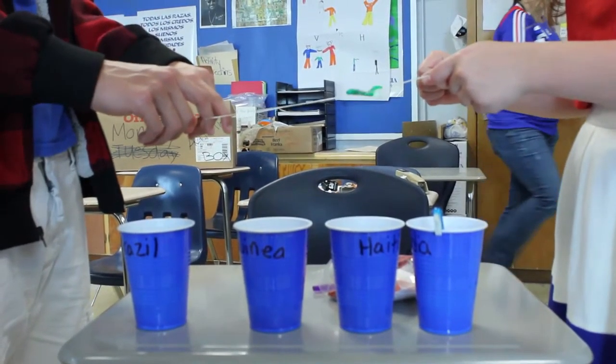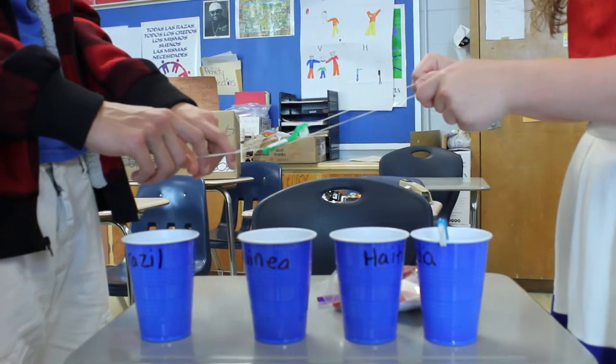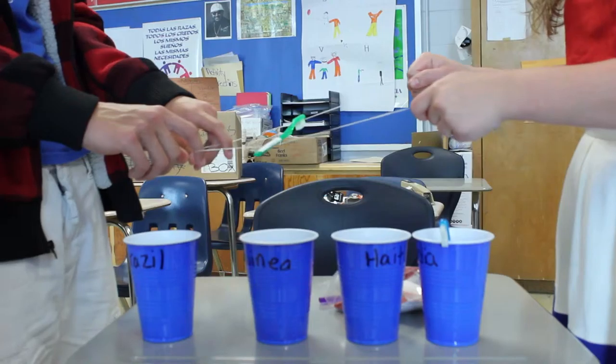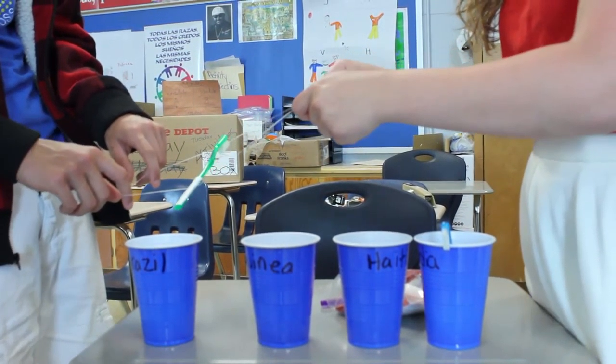Each group gets a bag of four toothbrushes and four cups in addition to a thing of dental floss. Each toothbrush has a name of a language on it and the cups have a name of a country on it. The agents have to get the toothbrush into the cup that speaks that language but only using the floss.